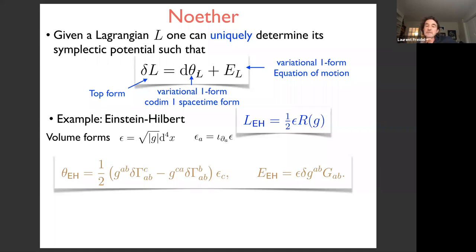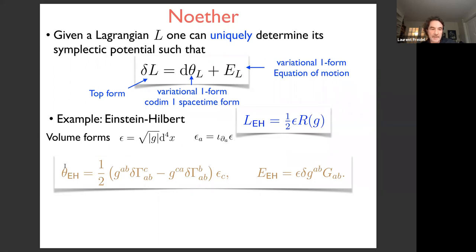The Lagrangian is a top form, the symplectic potential is a variational one-form and a co-dimension one spacetime form, and the equations of motion are a variational one-form. For Einstein-Hilbert, the Lagrangian is the volume density sqrt(g) d^4x times R. The symplectic potential is a co-dimension one form obtained by contraction with a vector field, and essentially contains the variation of the connection.